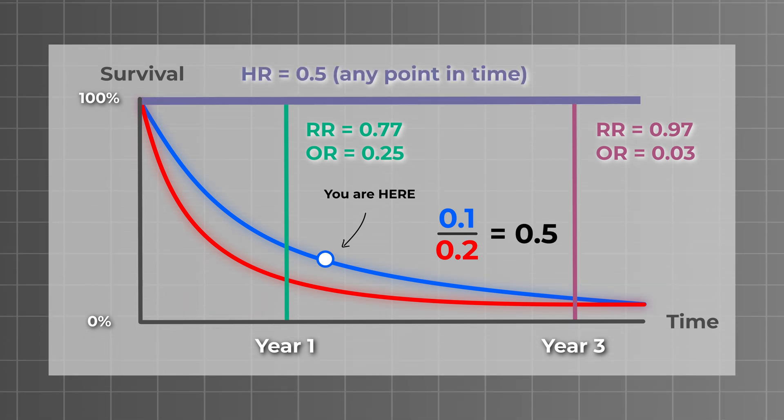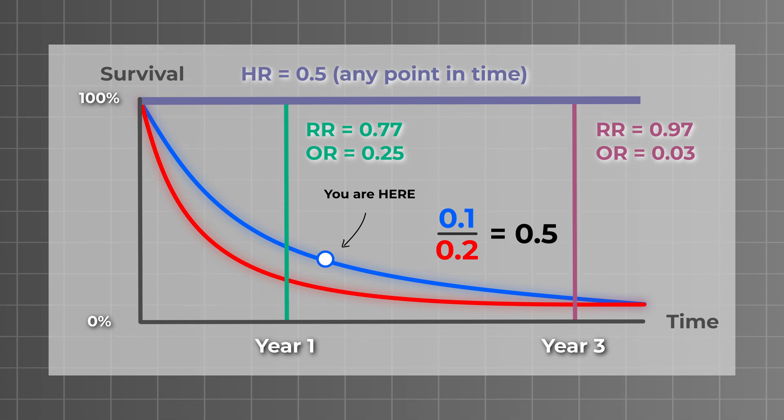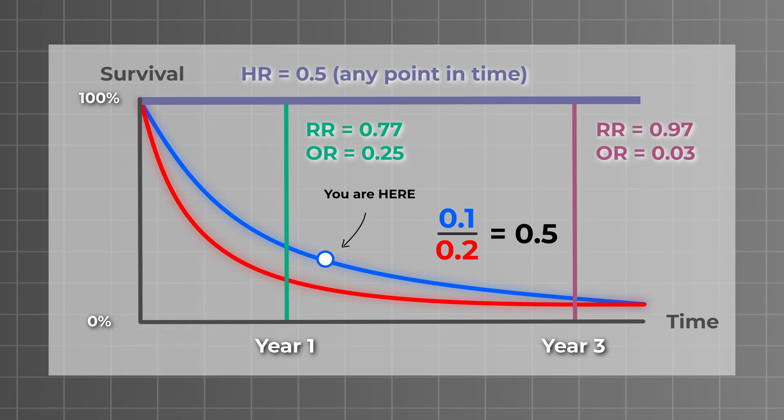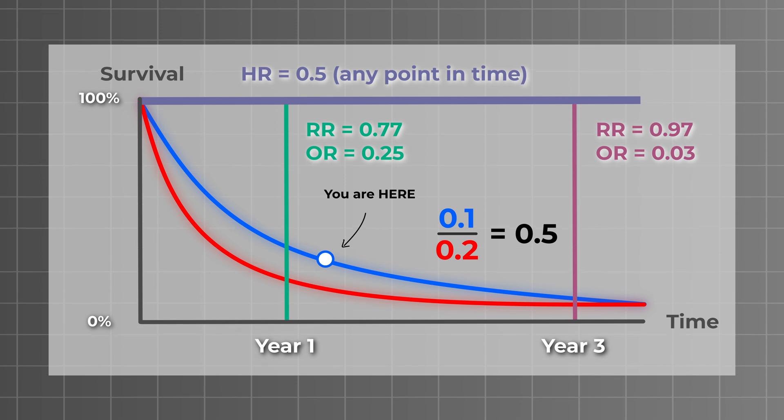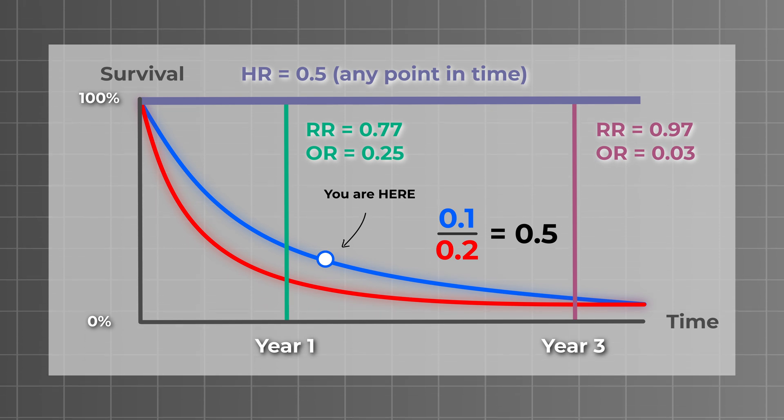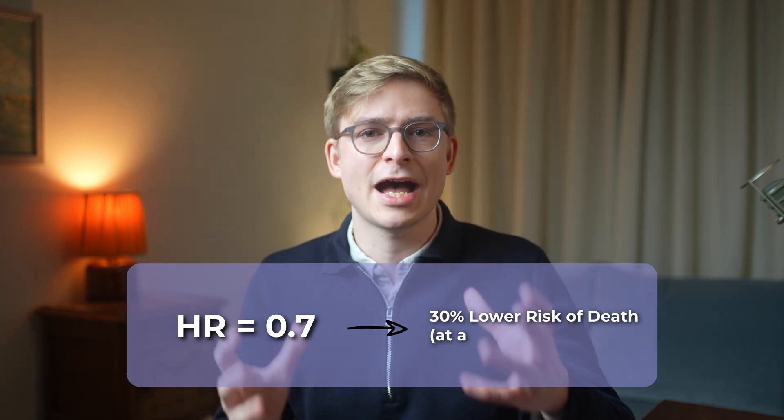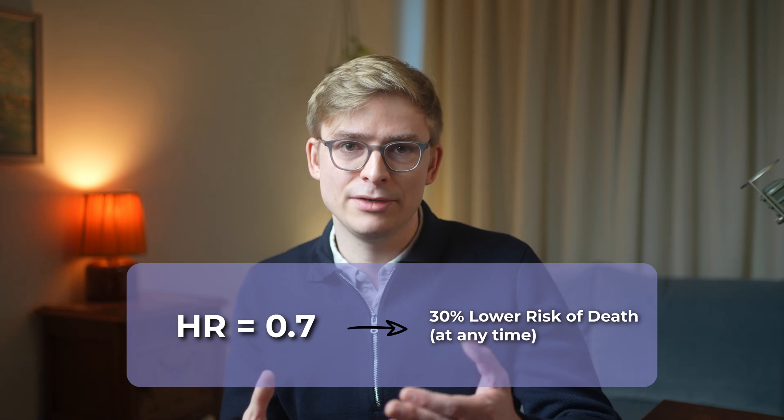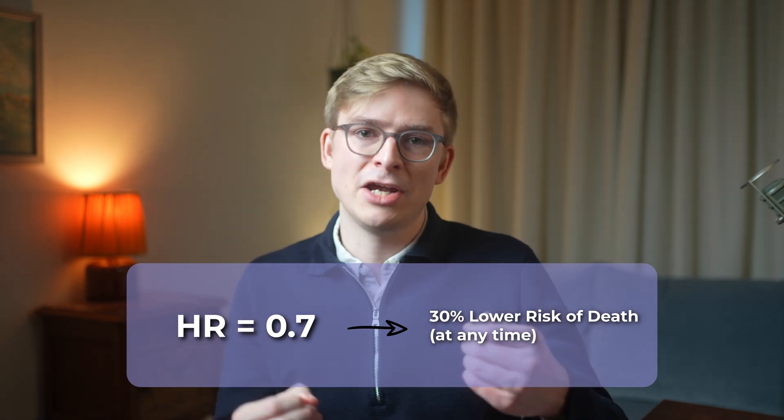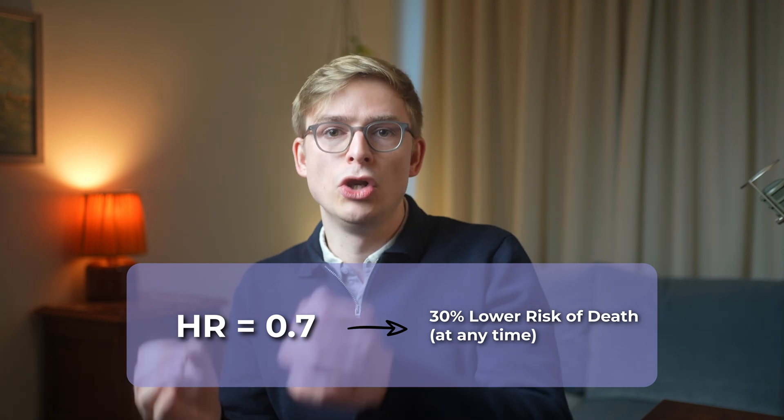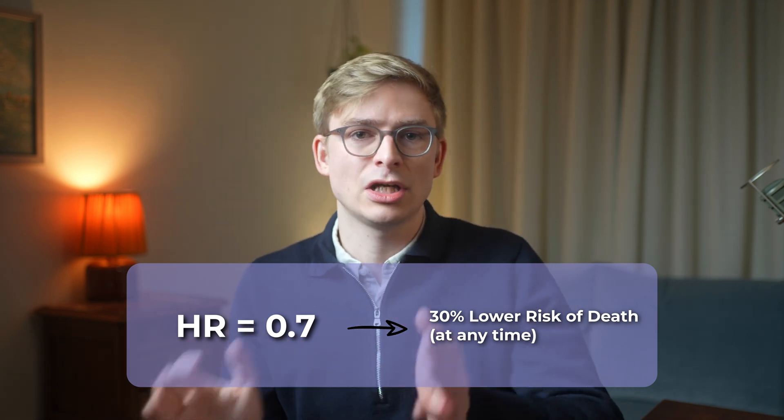This means that the hazard of death for patients on the new drug is 50% of the hazard for those on standard of care treatment, so they're 50% less likely to die, given that they've already survived up until that point. If the hazard ratio were 0.7 instead, it would mean that the new treatment reduces the hazard of death by 30%, or in other words, patients in the new treatment group have a 30% lower risk of dying at any given time during the study.